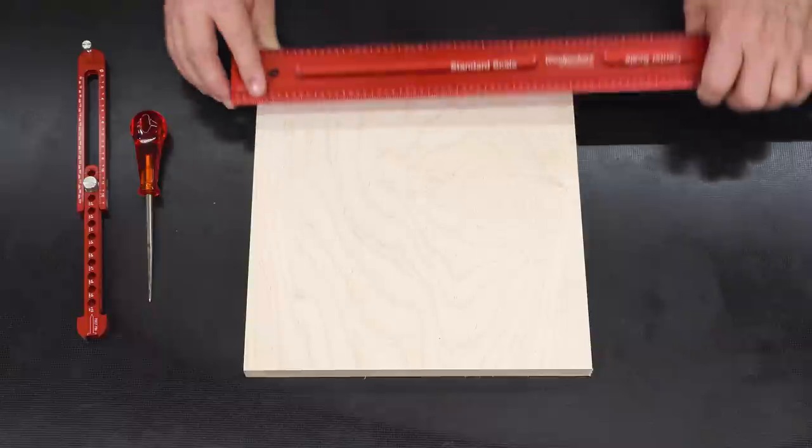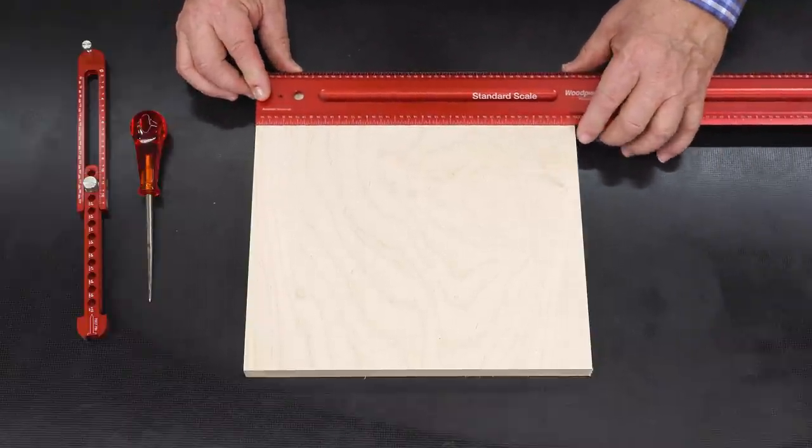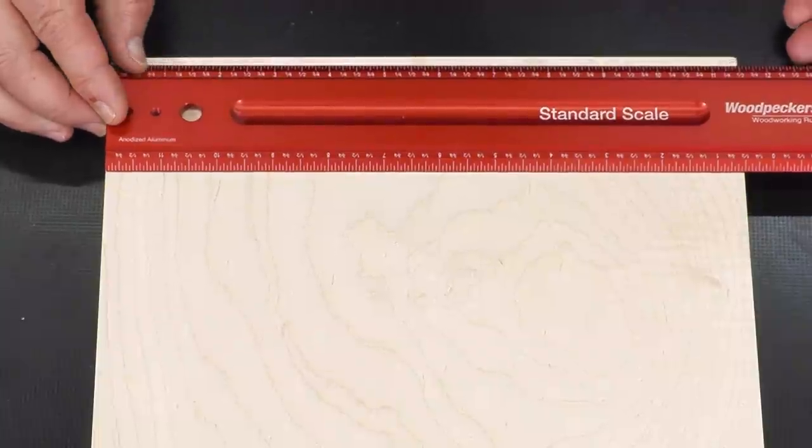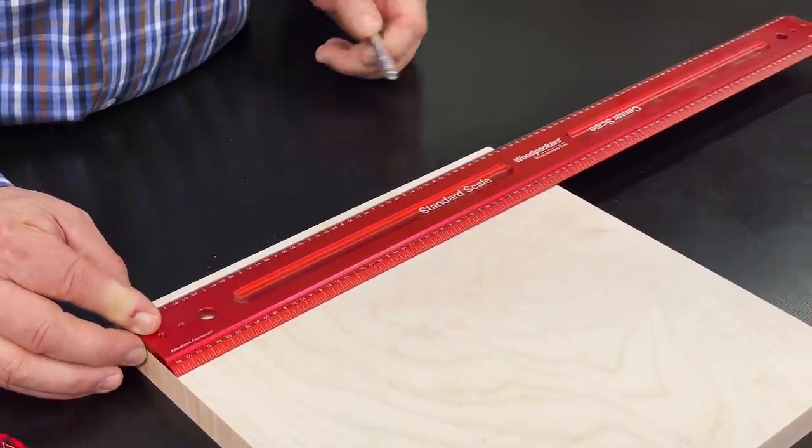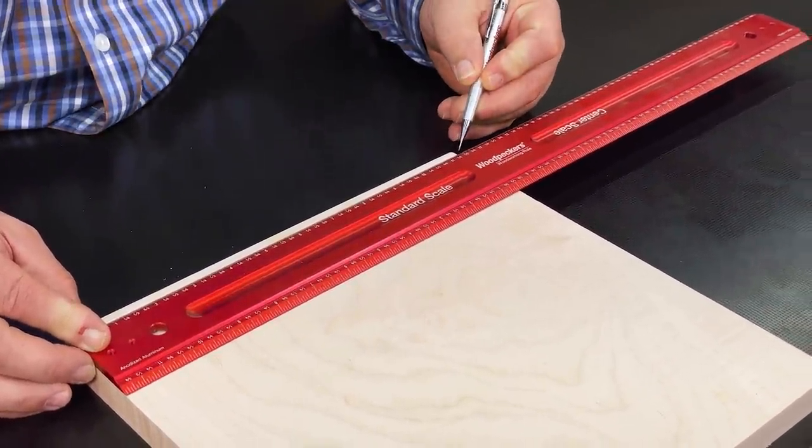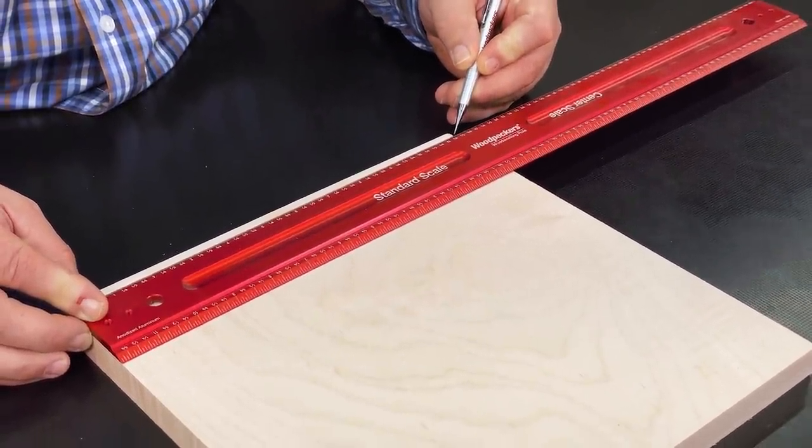So as I do this we've got the camera set up and I'm going to try and work upside down so it'll be correct for the camera. So the first thing we need to do is locate center of the stock. And using the standard scale on the woodpecker's woodworking rule I can see that my stock is 11 and a half inches wide.